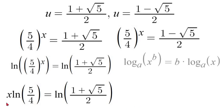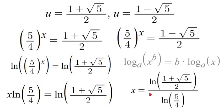Now we just need to do some simple algebra and divide by natural log of 5 over 4 so that we can get x by itself. So we'll have x is equal to natural log of 1 plus square root of 5 over 2 which is all over natural log of 5 over 4.